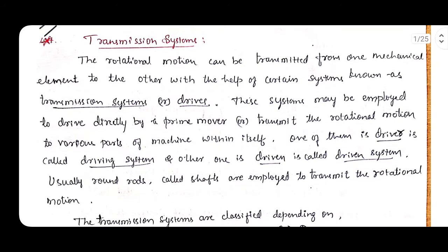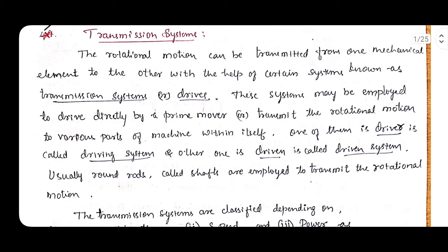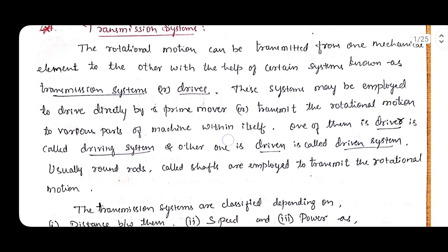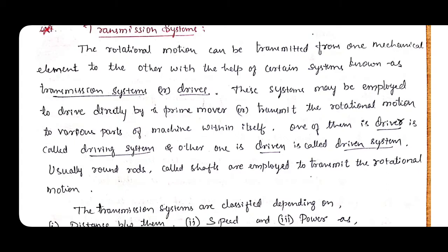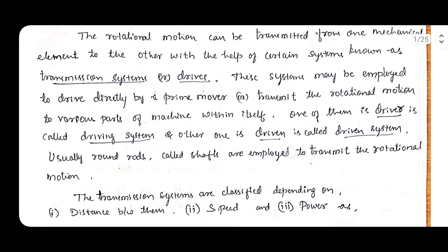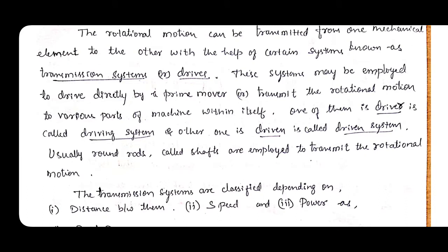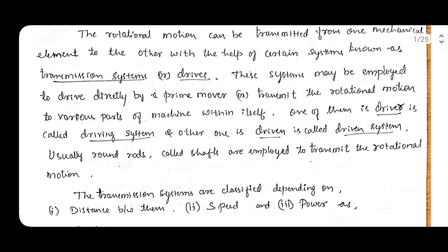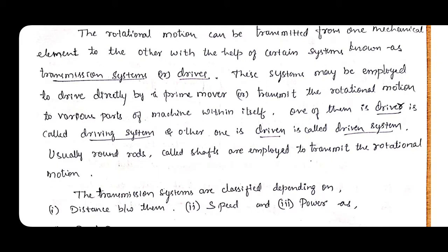These systems may be employed to drive directly by prime movers, transmitting rotatory motion to various parts of the machine. Whatever the power-generating device, such as a motor — a motor is a prime mover — from where the rotational energy is generated, that prime mover transmits the rotational energy from one point to another. One part is called the driver, connected to the source or prime mover, and the other is the driven, connected to the receiving device.